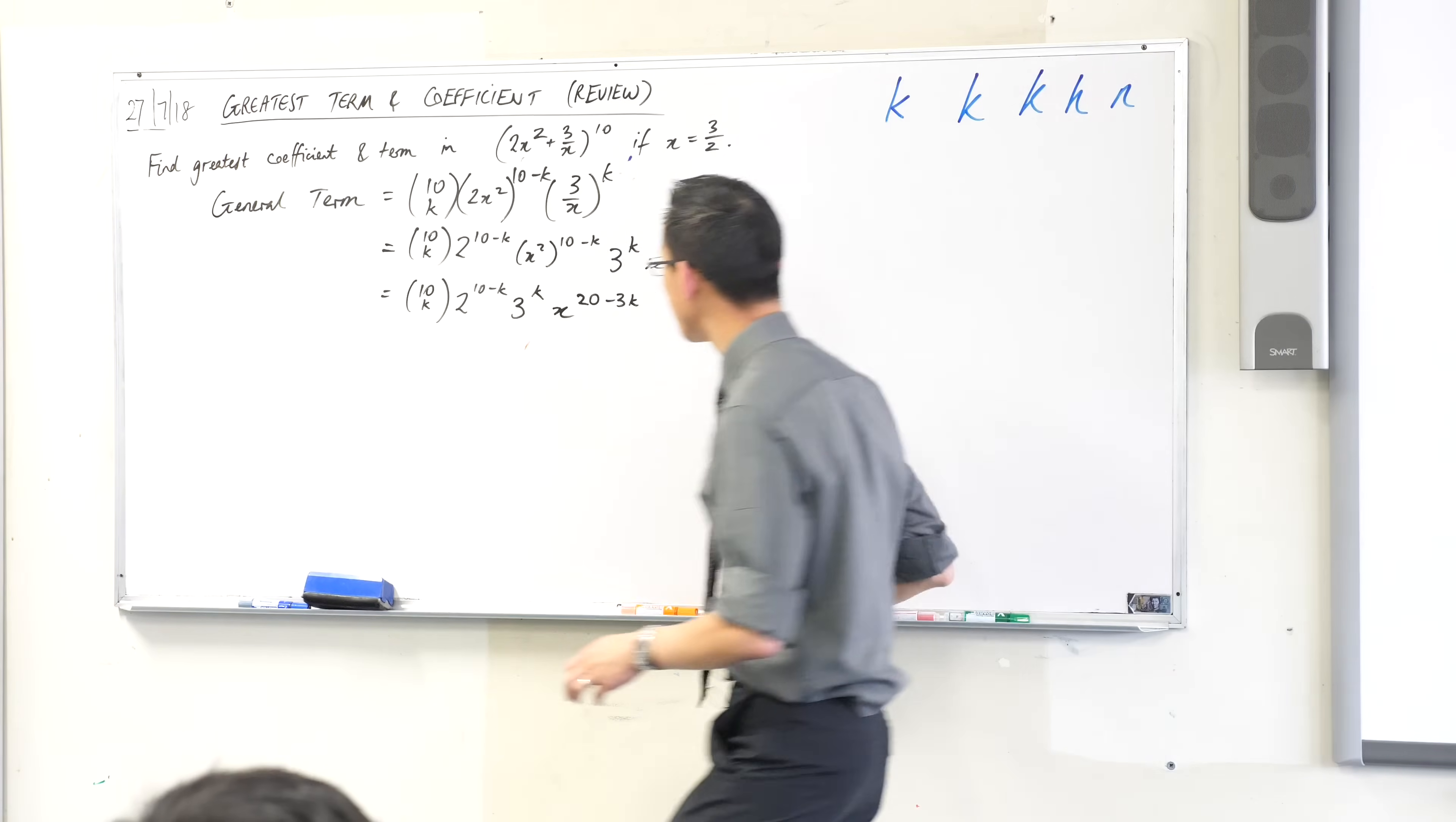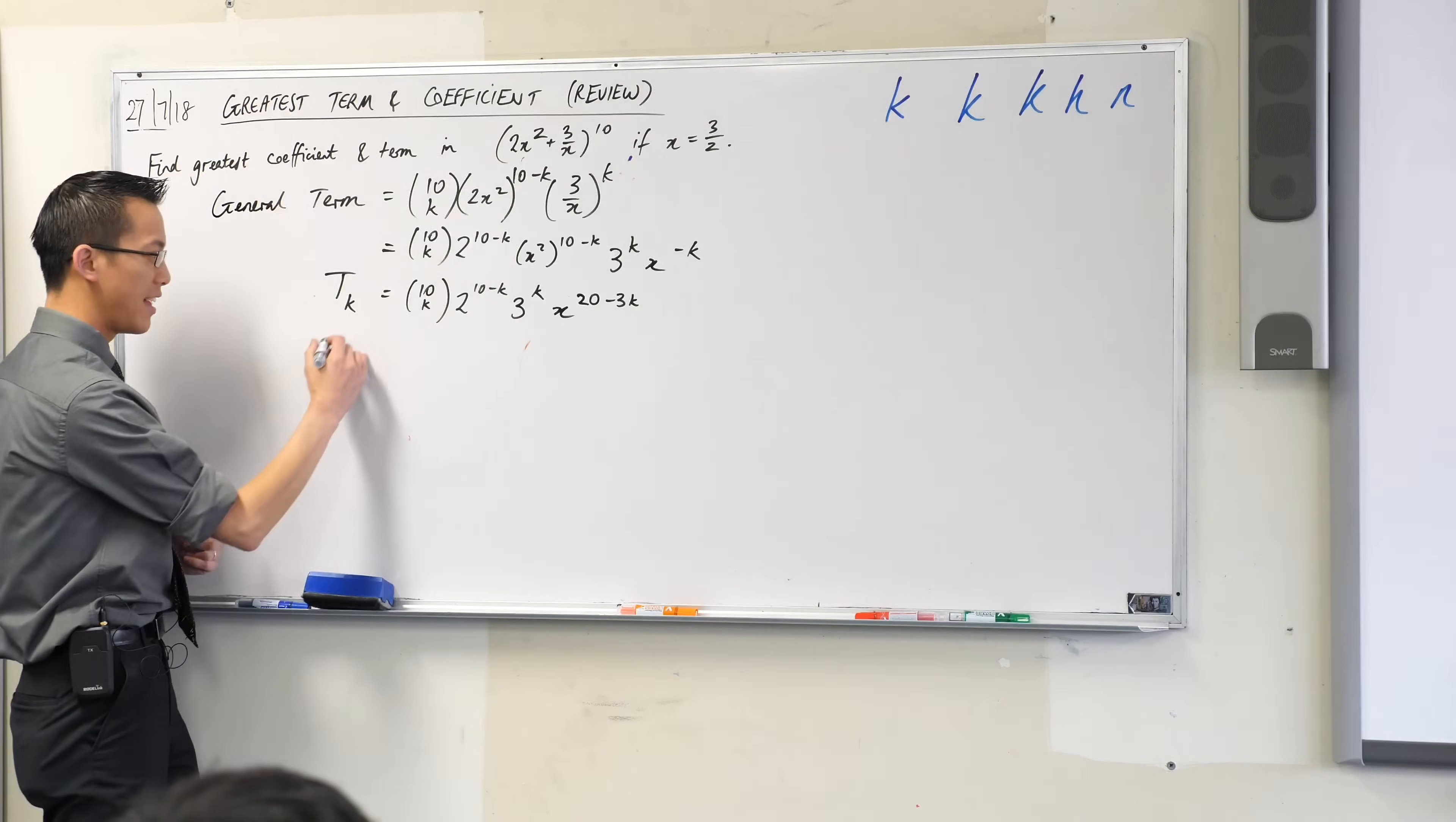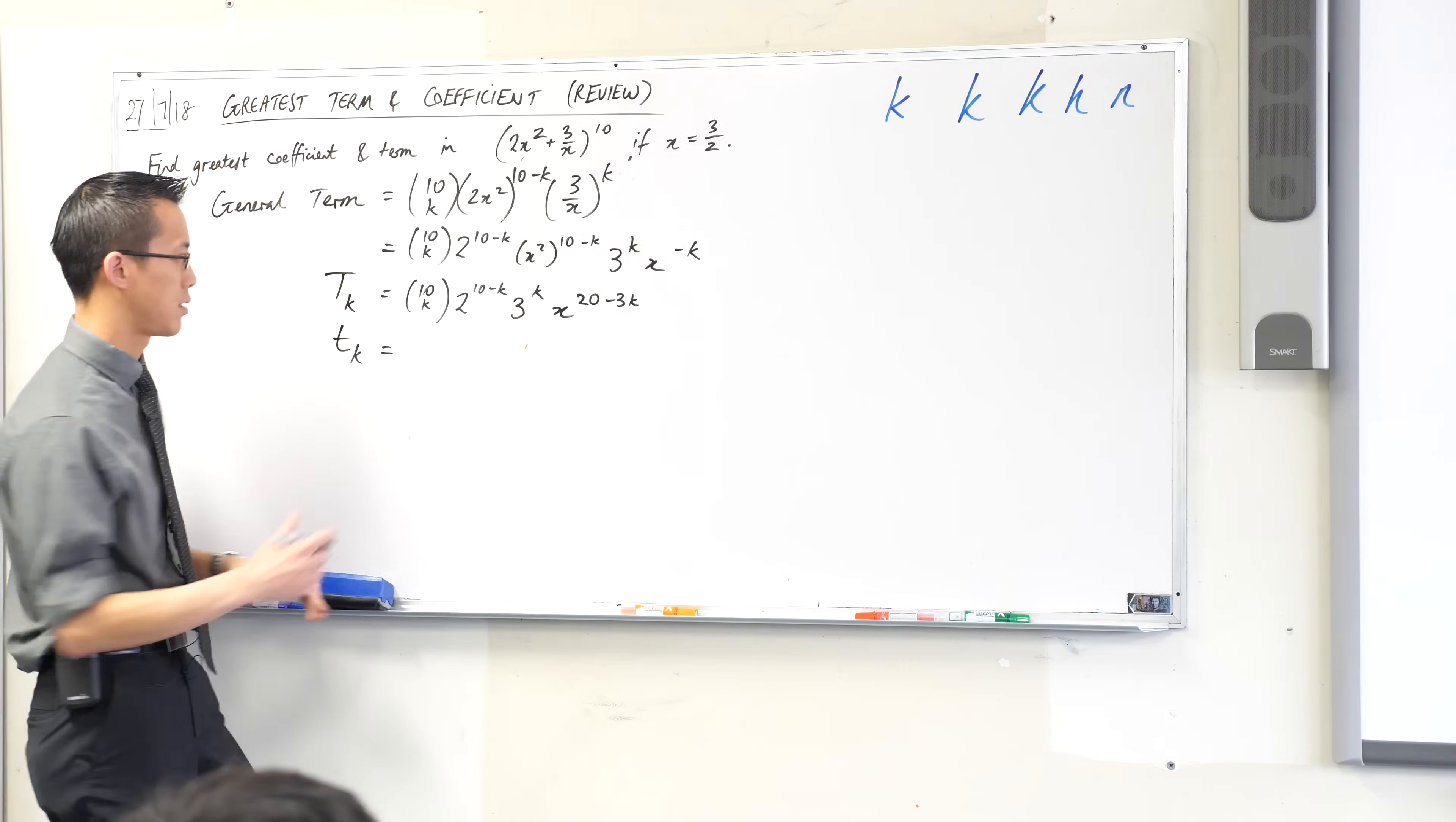So at this point, I've got the general term. You've already seen before, Mrs. Lees has mentioned that we use the capital T to indicate the whole term, and then we will either use a c for coefficient or a little t, because it's just a part of it, to indicate the coefficient part that we're interested in. So you can see I can read that off from here, it's just all the stuff that's not x's. Does that make sense? So I'm going to do that right now.